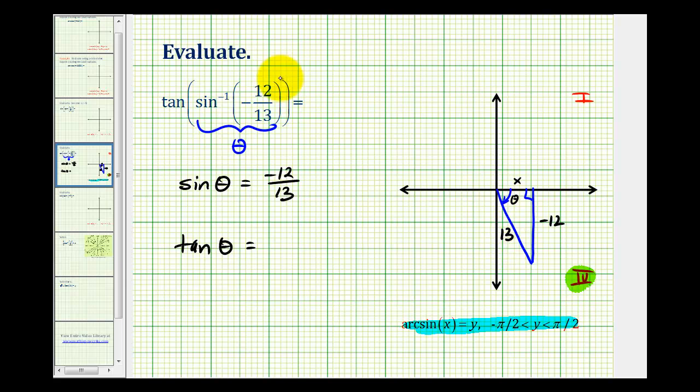And then using the Pythagorean theorem, we know that x squared plus negative twelve squared must equal thirteen squared, so we'd have x squared plus one hundred forty-four equals one hundred sixty-nine. So x squared is equal to twenty-five, and so x is equal to plus or minus five.